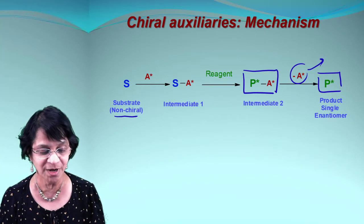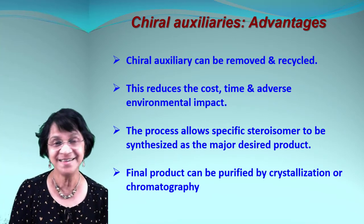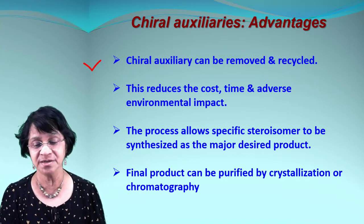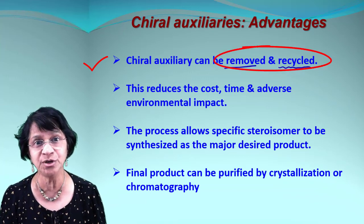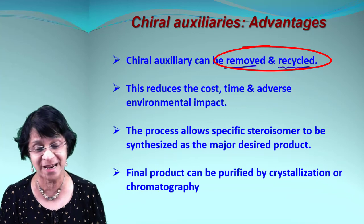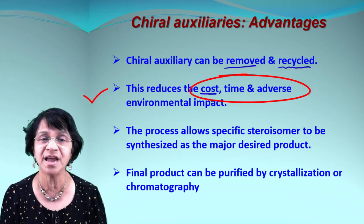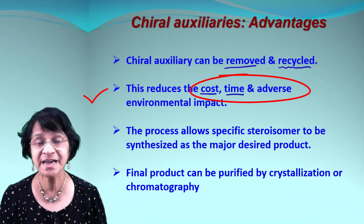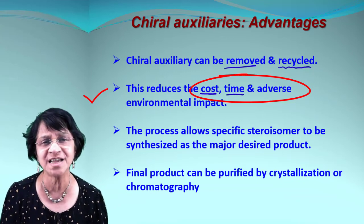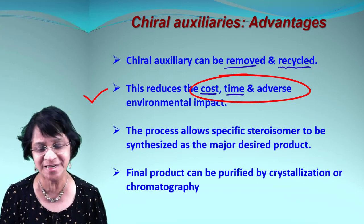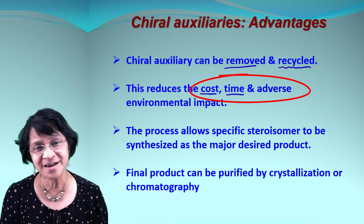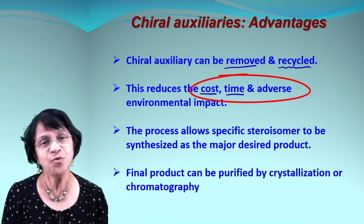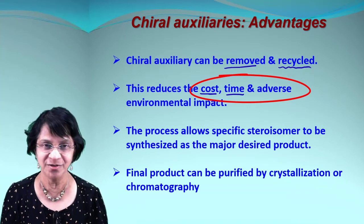What are the main advantages of chiral auxiliaries? One is that the auxiliary can be removed, recycled, and reused — saving cost because you don't have to buy new chemicals every time, and saving time because regular synthesis of something like taxol takes many steps. There are also fewer adverse environmental impacts since fewer solvents need to be disposed of.